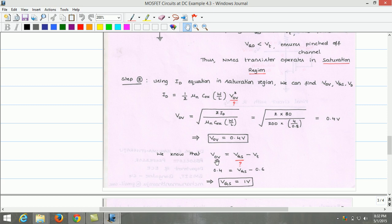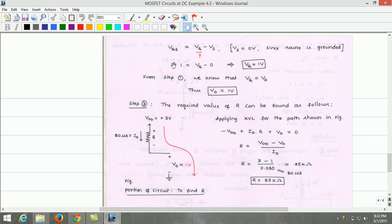We know that overdrive voltage and gate source voltage are related by the equation overdrive voltage equals Vgs minus Vt. Overdrive voltage is 0.4 volts. We can substitute overdrive voltage along with threshold voltage. We can find what is the gate source voltage needed. The gate source voltage needed is 1 volt. Further, we can calculate what is the gate voltage needed based on this equation. We know that Vgs equals Vg minus Vs. The source voltage equals 0 volts since the source is at ground potential. So from this, we can estimate what is the gate voltage. The gate voltage is 1 volt.